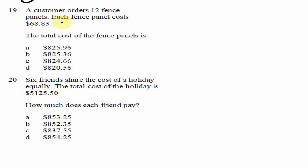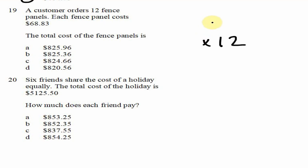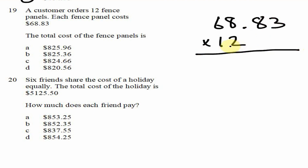Question 19: a customer orders 12 fence panels. Each fence panel costs $68.83. What is the total cost? Since one fence panel costs $68.83, then 12 fence panels cost 12 times as much. We need to multiply 12 by 68.83.